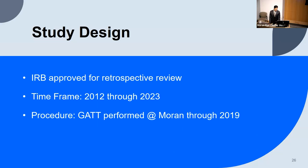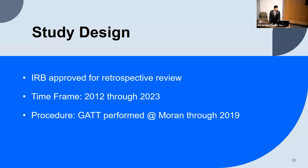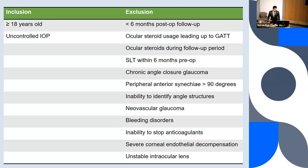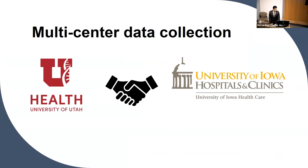The GAT procedure will have been performed through 2019, giving at least four years of follow-up. Inclusion criteria focus on adult patients with uncontrolled IOP who needed the procedure. Exclusion criteria address follow-up quality, steroid use, angle status, and significant comorbidities like neovascular glaucoma. This is actually a joint project with Iowa — collecting data from both sites. It's led by Dr. Chaya, with John Mousser, along with two medical students. On the Iowa side: Dr. Pow and fellow PGY-3 Dr. Mansoor.